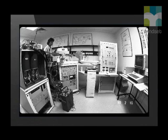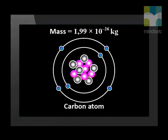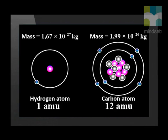Now let's discuss the mass of an atom. Using a special instrument called a mass spectrometer, we can determine the mass of a hydrogen atom or a carbon atom. The mass of a hydrogen atom is 1.67 times 10 to the power negative 27 kg. The mass of a carbon atom is 1.99 times 10 to the power negative 26 kg. These numbers are very small and difficult to compare, so we need a more convenient way to measure the mass of an atom. This unit is called the atomic mass unit, AMU.